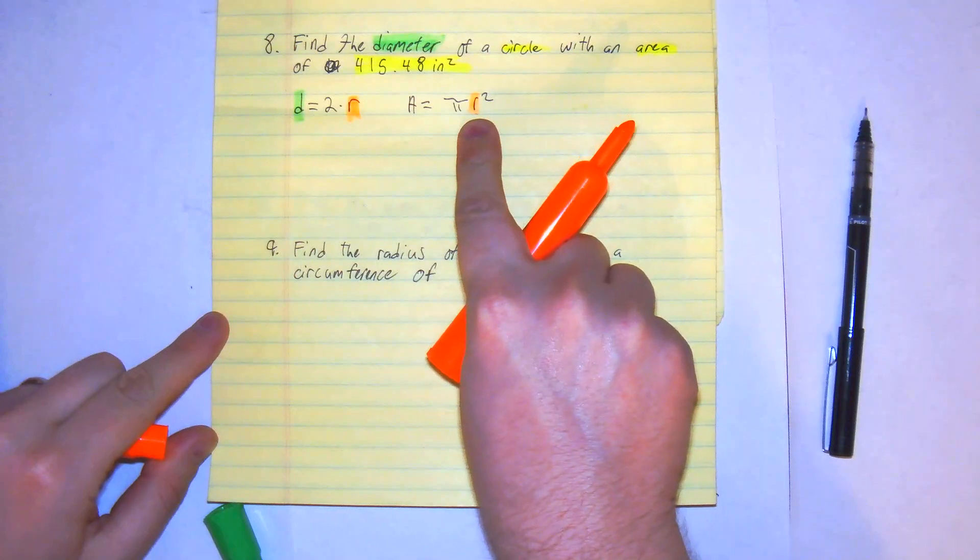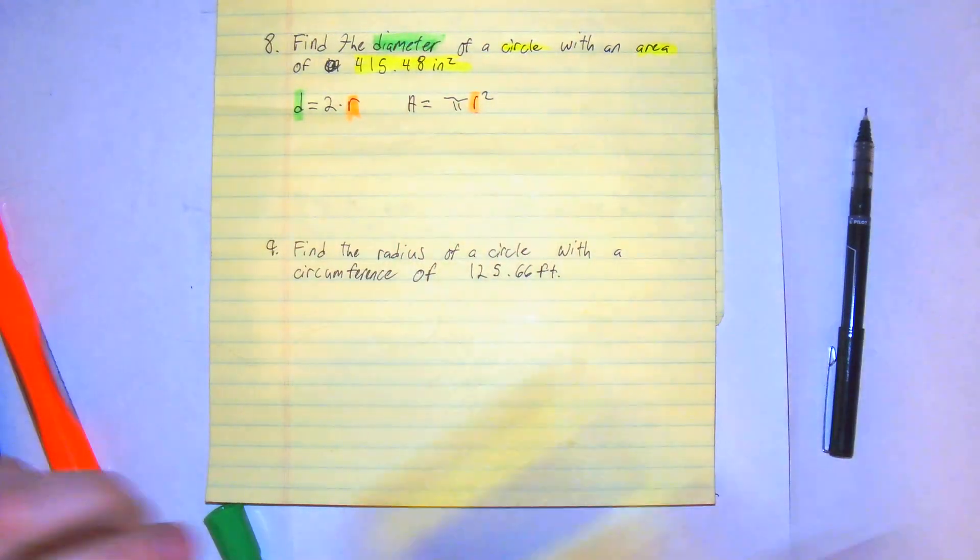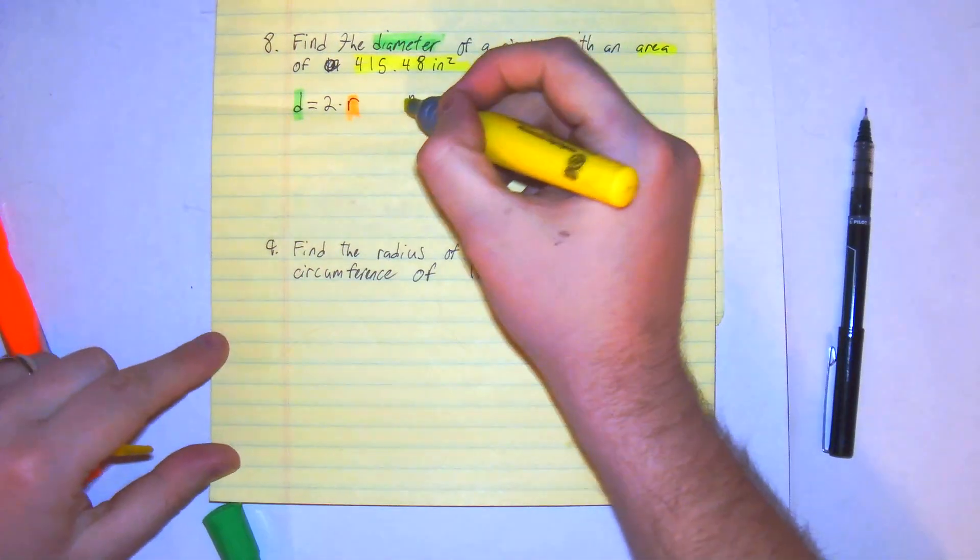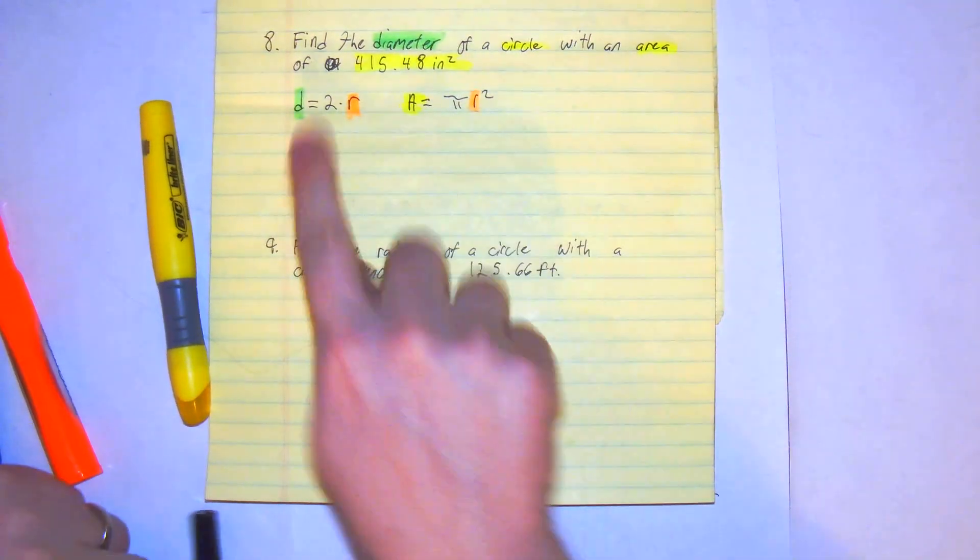So we're going to find that value of r and plug it in here to find the diameter. We have the area given. So this will be our first step, that will be our second.